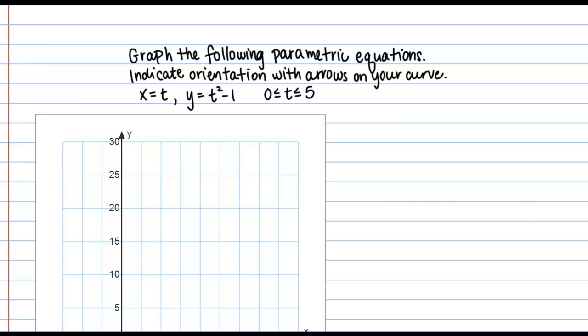In this example, we're going to practice graphing a parametric equation. The directions are graph the following parametric equations, indicate orientation with arrows on your curve. And the equations are x equals t, and y equals t squared minus 1, for t values between 0 and 5.